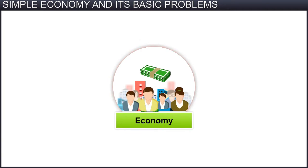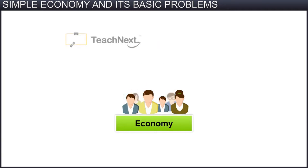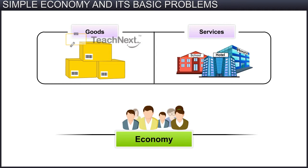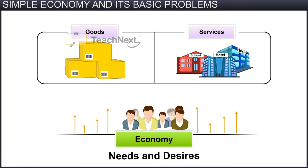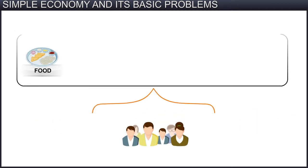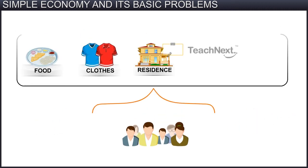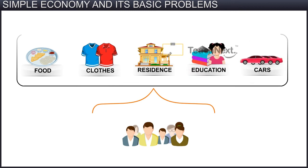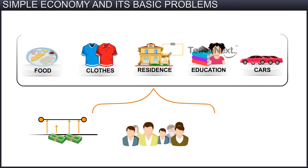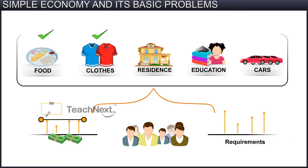Individuals in an economy or society need various goods and services to satisfy their unlimited needs and desires. An individual generally needs food, clothes, a residence, education for their children, a car, and so forth. But due to limited resources, mainly money, individuals cannot acquire all the things they want.